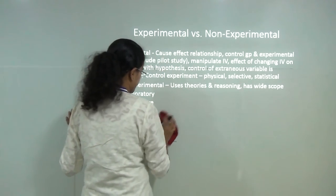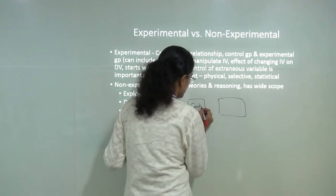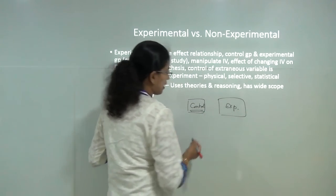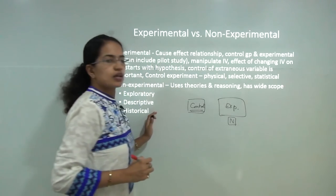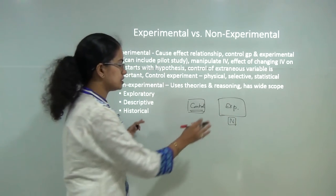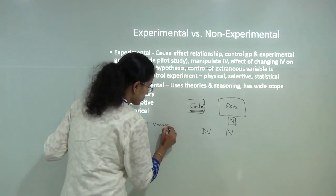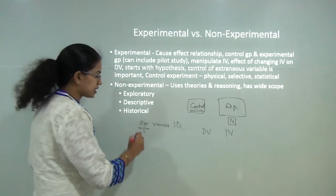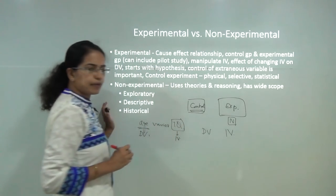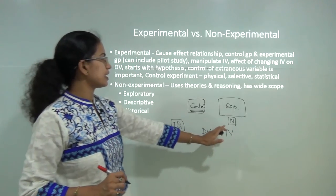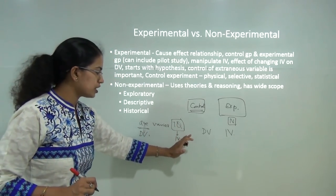The next type is experimental versus non-experimental. In experimental research, there are two groups: a control group and an experimental group. For the control group, I am not manipulating the independent variable; for the experimental group, I am manipulating it. As a quick distinction: if age varies with IQ, age becomes the dependent variable, and IQ becomes the independent variable. Under experimental settings, we manipulate the independent variable and observe the effect of that change on the dependent variable.